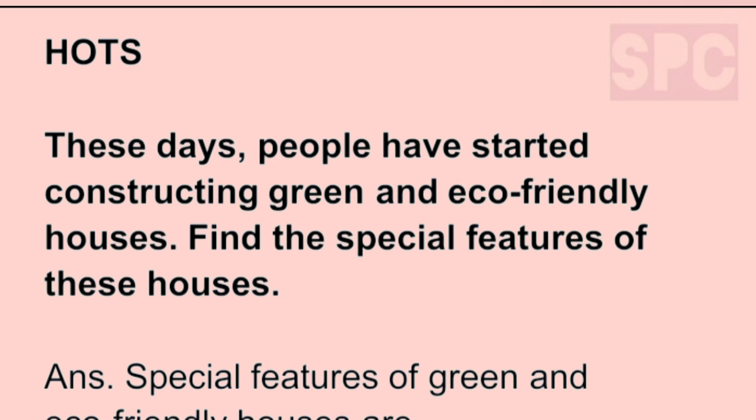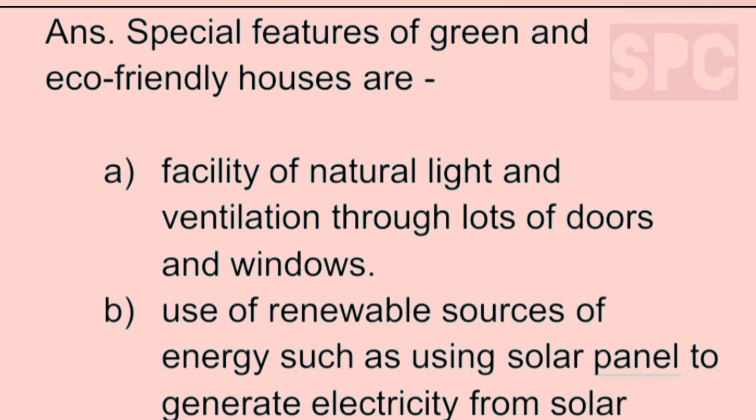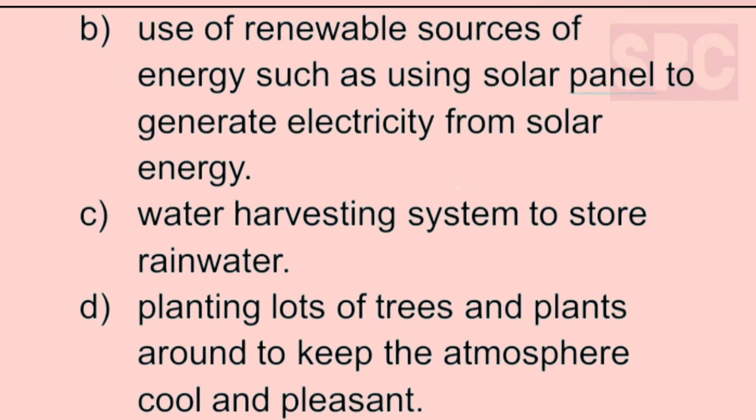HOTS question: these days people have started constructing green and eco-friendly houses — find the special features of these houses. Answer: special features of green and eco-friendly houses are: (a) facility of natural light and ventilation through lots of doors and windows; (b) use of renewable sources of energy such as solar panels to generate electricity from solar energy; (c) water harvesting system to store rainwater; (d) planting lots of trees and plants around to keep the atmosphere cool and pleasant.